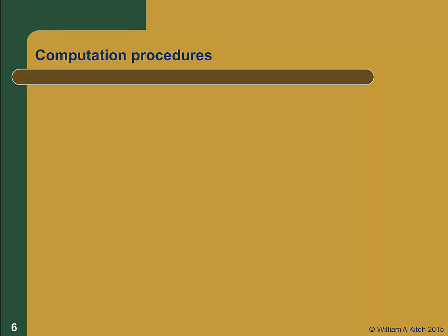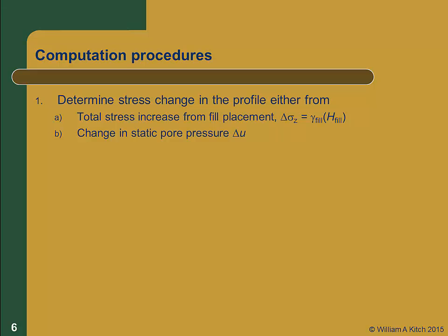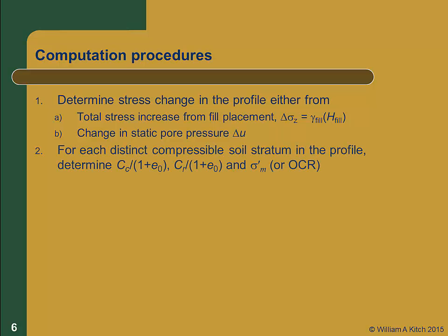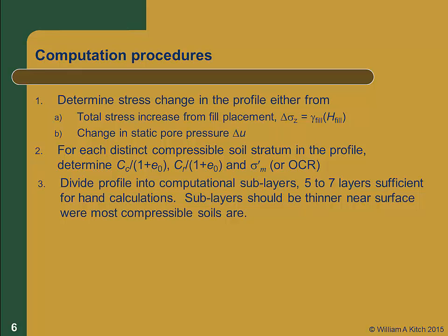Let's summarize the computation procedures. The first step is to determine the stress changes in our geologic profile — they can come either from a change in total stress due to fill placement, or a change in static pore water pressure from lowering the groundwater table. We must then identify each of the distinct soil strata in our profile and determine their consolidation properties: C sub C over 1 plus E naught, C sub R over 1 plus E naught, and either sigma prime M or OCR. We then divide the soil into sublayers. For hand calculations, 5 to 7 layers is sufficient. Use thinner layers near the surface where the most compressible soil is, and thicker layers lower down. If you develop a spreadsheet, you can just use a large number of equally thin sublayers.